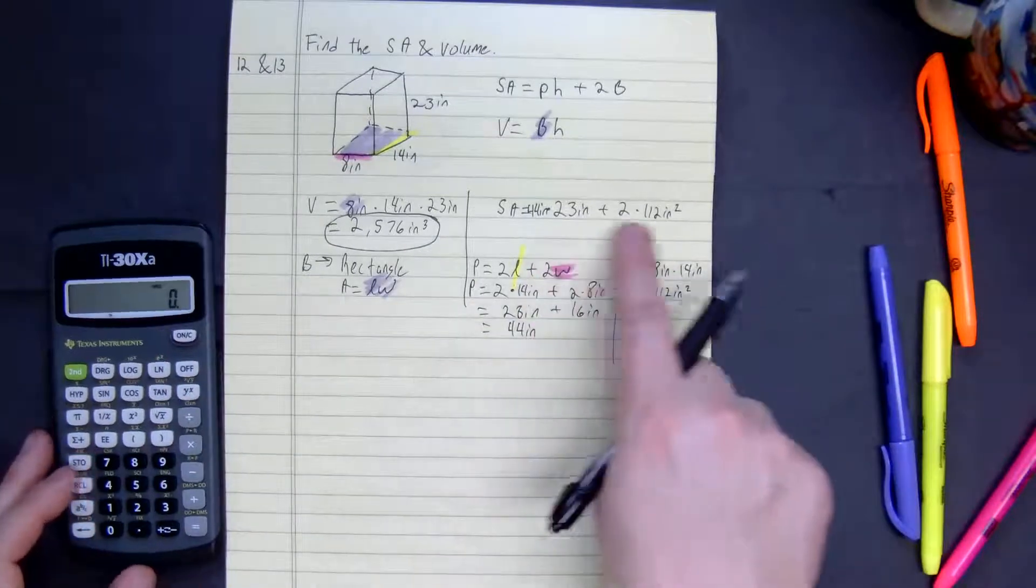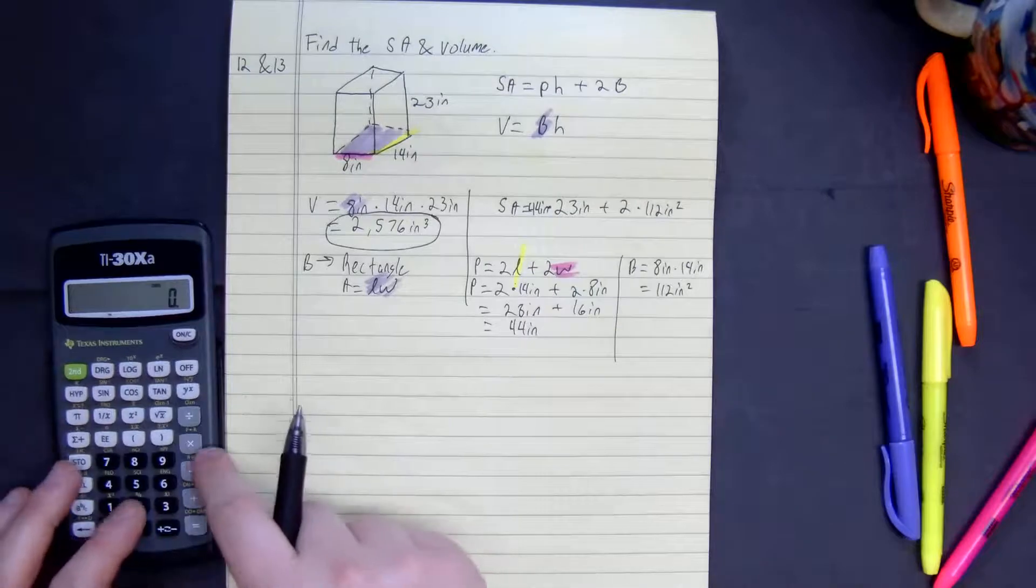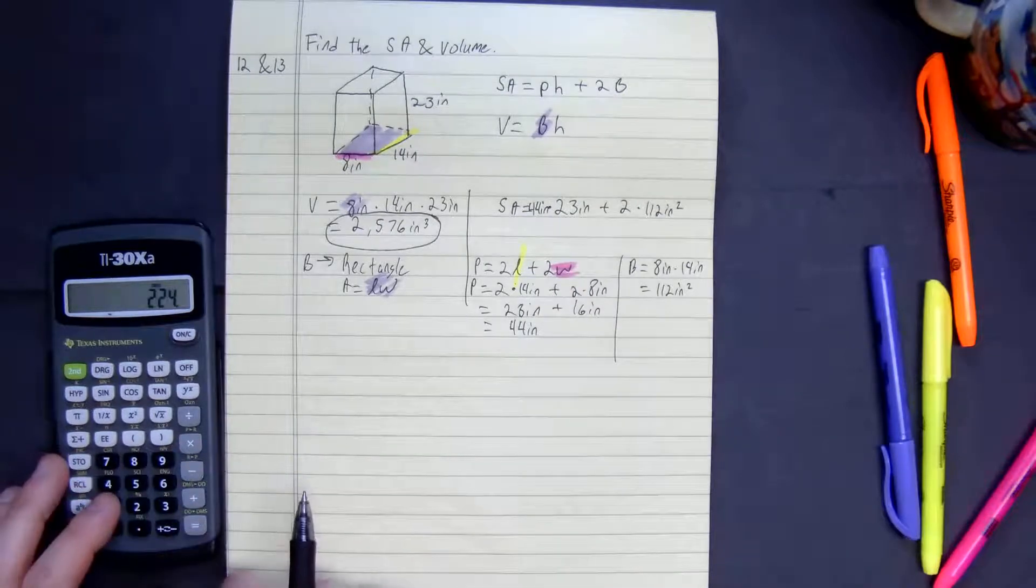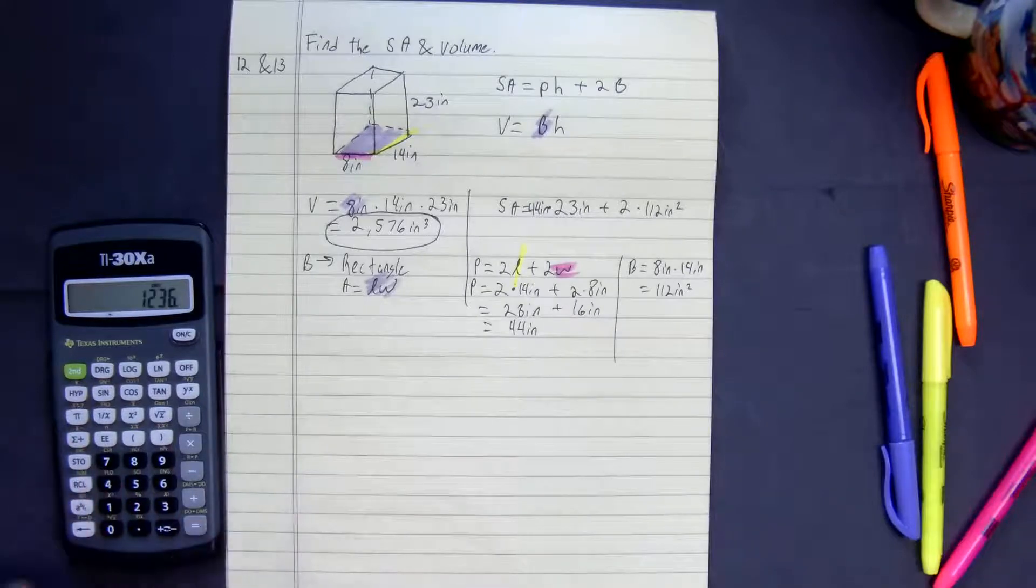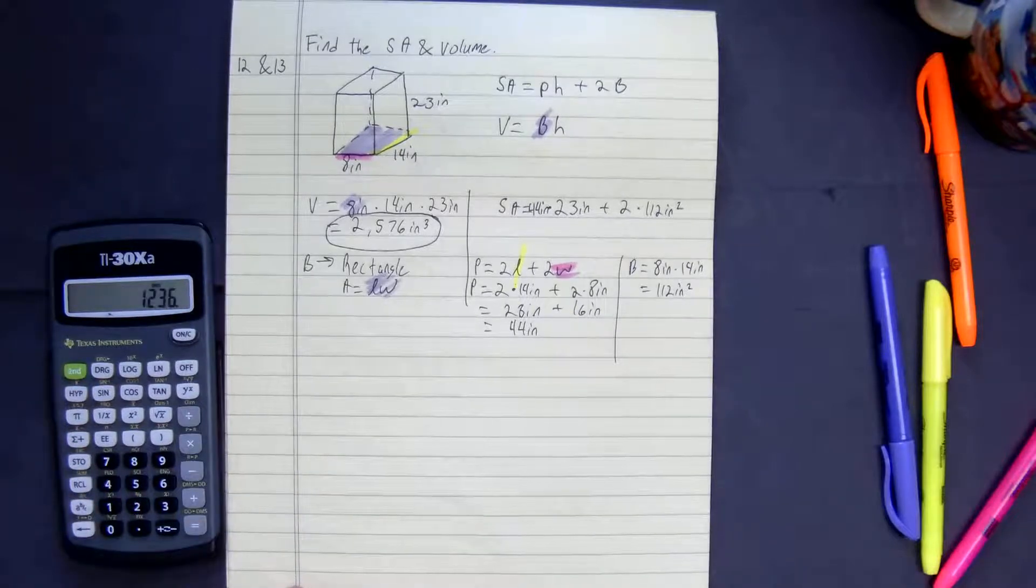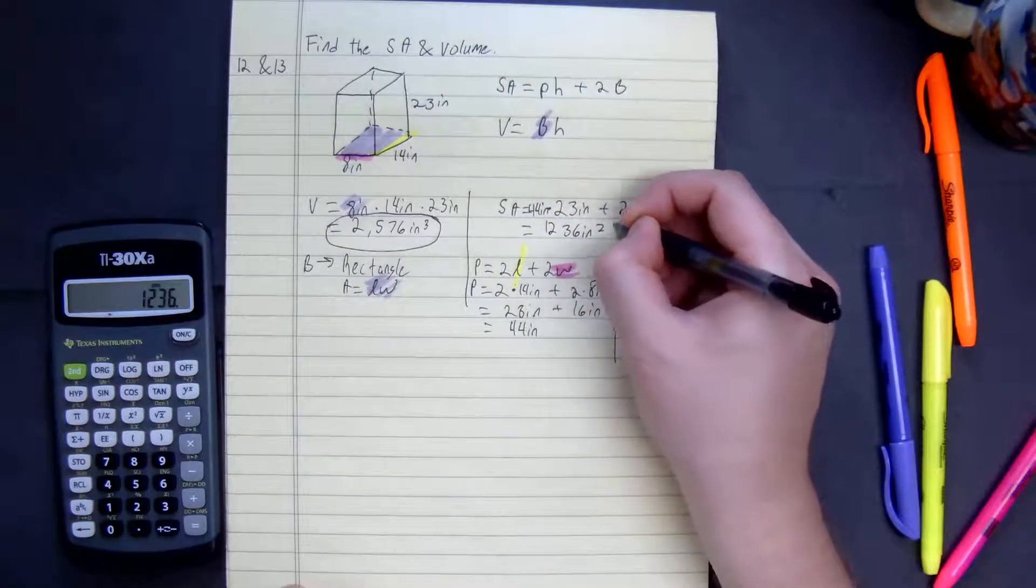All you do, let's do this and then start adding. So we do 2 times 112, 224, plus 23 times 44, and get our answer of surface area is equal to 1,236 inches squared.